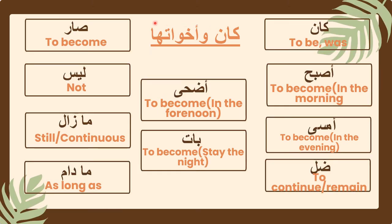These are the words of كان وأخواتها: كان، أصبح، أمسى، ظلَّ، أضحى، بات، صار، ليس، ما زال، ما دام. I am only providing the most commonly used and significant words of كان and its sisters; however, there are more words that are rarely used.